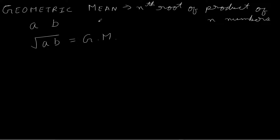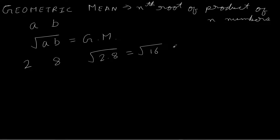Let's say we have two numbers 2 and 8. Then the geometric mean would be the square root of 2 multiplied by 8, which is the square root of 16, which equals 4. So the geometric mean of 2 and 8 is 4.